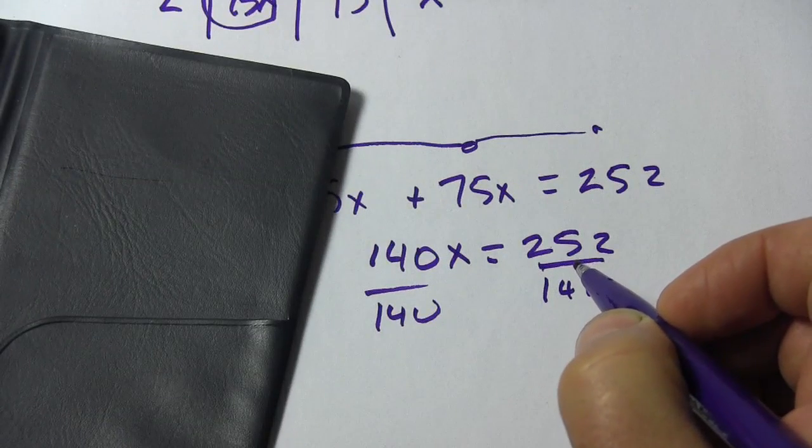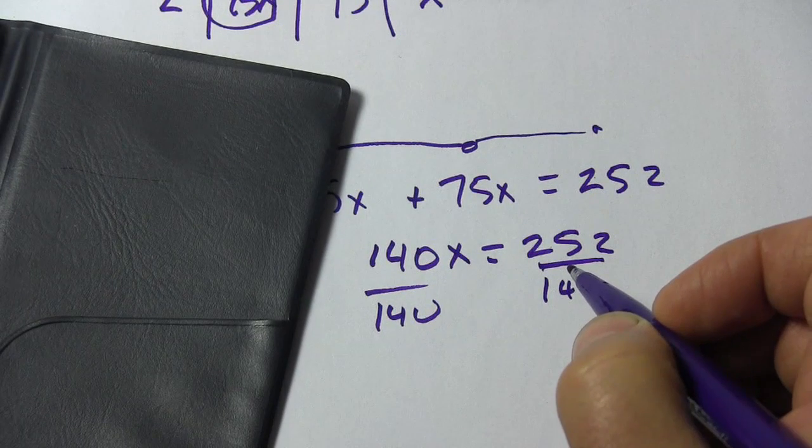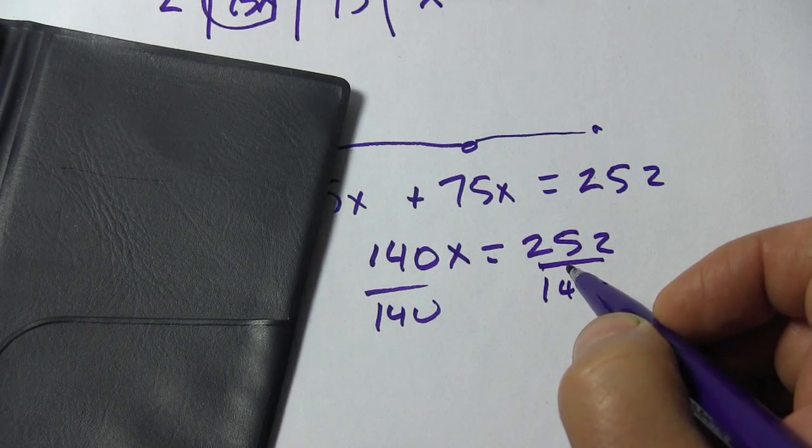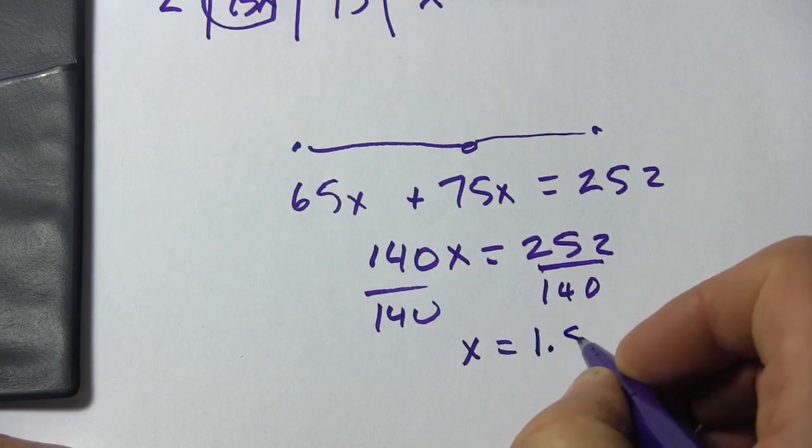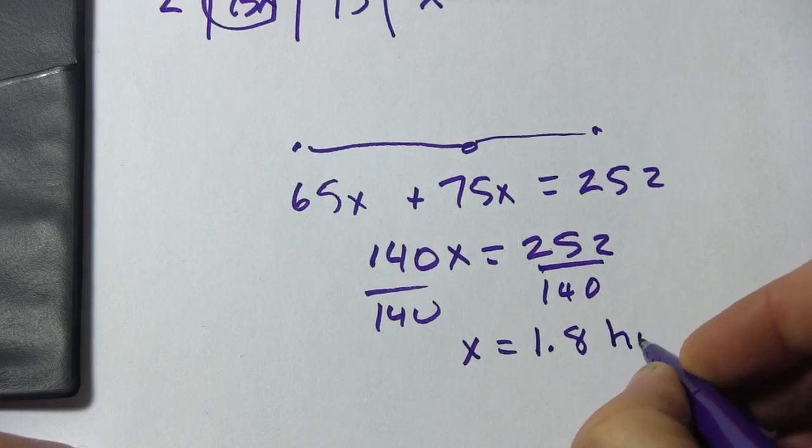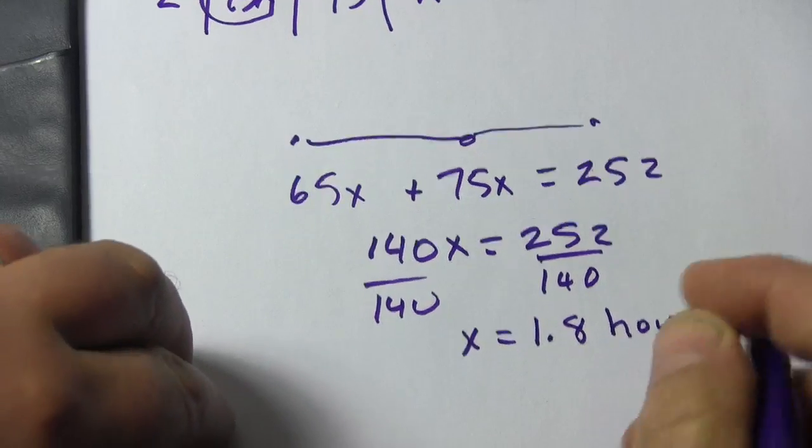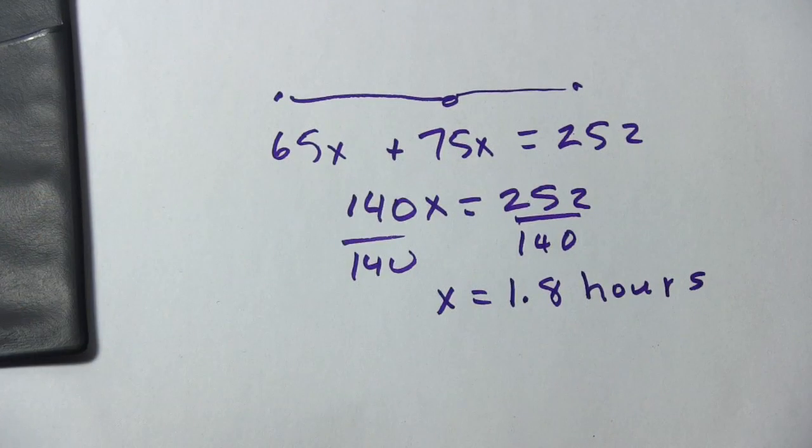Let me grab my calculator. And that is 1.8. And that is in hours. So it takes these trains 1.8 hours before they meet.